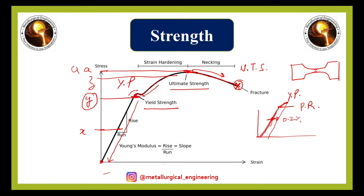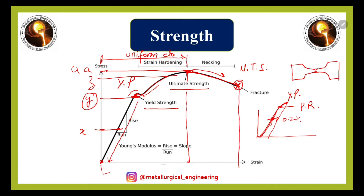There are two important terms here. When the material reaches up to the UTS point, the deformation from zero up to that point is known as uniform elongation. When the material reaches up to the fracture point, the deformation of the material up to that point is known as total deformation.